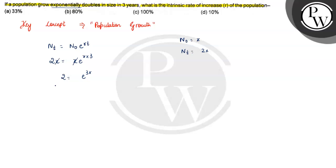Now taking log on both sides. If we take log on both sides, log to the base 10 of 2 is equal to log of e to the power 3r. Using log of m power n equals n log m, we will apply this. So 3r times log e to the base 10.